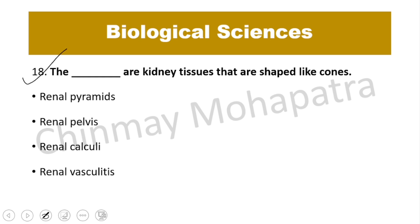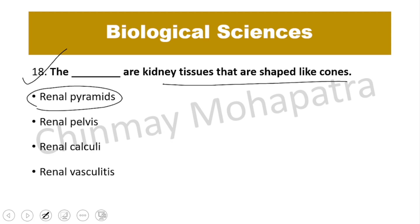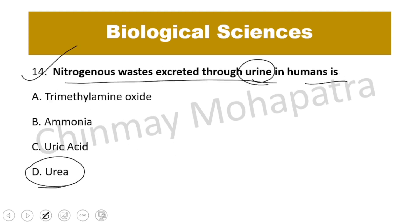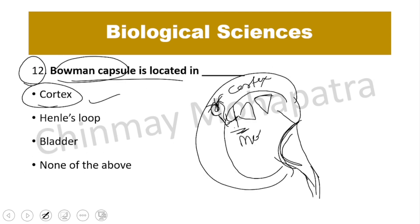Question number 18: Kidney tissues that are shaped like cones are called renal pyramids.